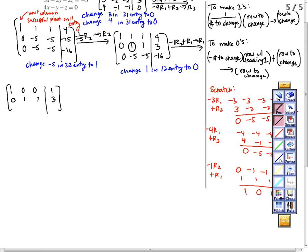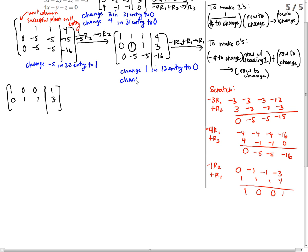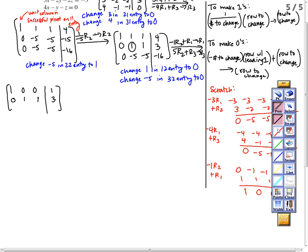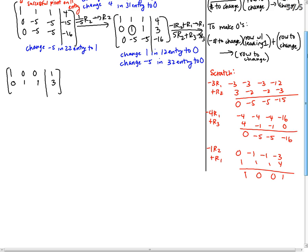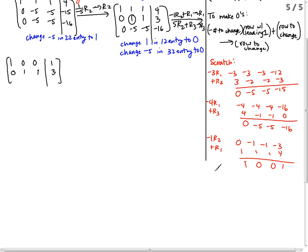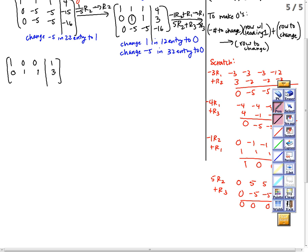My row 2 contains my leading 1, so I'm going to rewrite that. Now, I'm also going to change row 3. I want to change the negative 5 in the 3, 2 entry to a 0. To do that, I do 5 times the row with the leading 1, which I've circled as row 2. Add that to row 3 and put the answer in row 3. Let me scroll down a little bit so I can do the scratch. 5, row 2 is 0, 5, 5, 15. I'm going to add that to row 3, 0, negative 5, negative 5, negative 16. 0, 0, 0, negative 1. That is my new row 3.